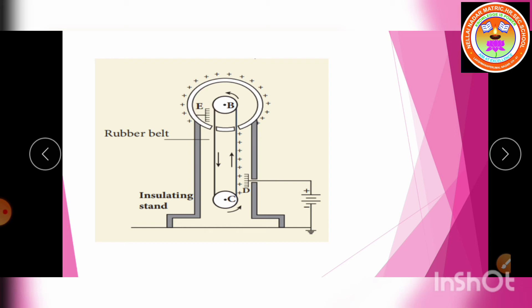Comb E is connected to the inner side of the hollow metal sphere. Comb D is connected to a positive potential of 10⁴ volts by a power supply, so comb D is maintained at a positive potential. Due to the high electric field near comb D, it has a positive charge.